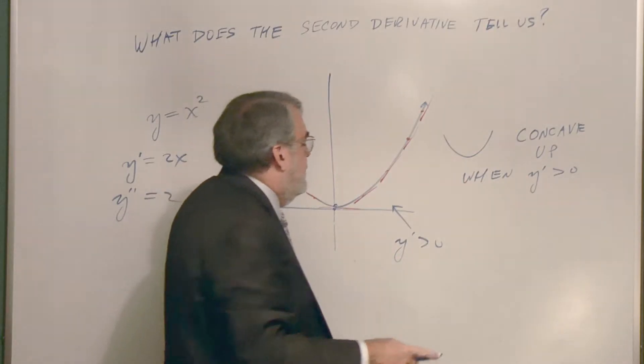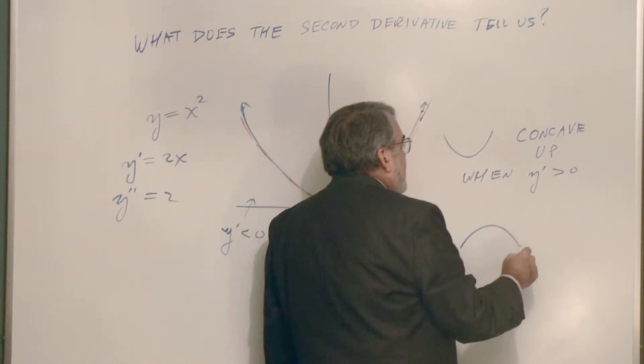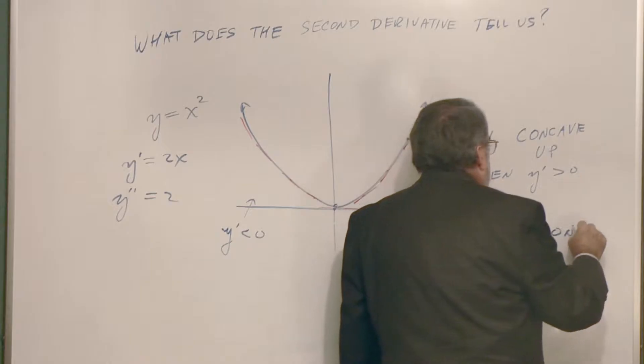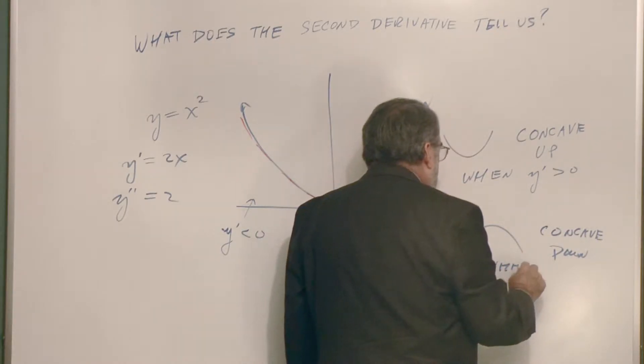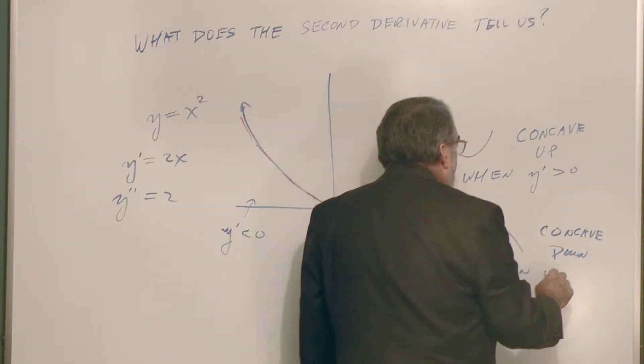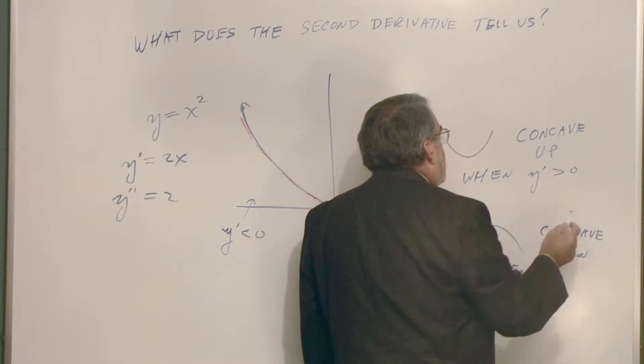And then, flipping around, this would be called concave down. Concave down. And this is when the first, second, ah, derivative is positive. And I have a mistake here.